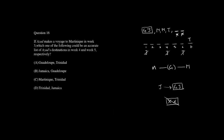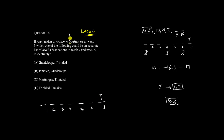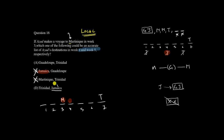Question 16 is another local question: if Azad makes a voyage to M in week three, which of the following could be an accurate list of Azad's destinations in weeks four and five respectively? We set up a working board with T in position seven and M in position three. Week four cannot be J — that's from our original rules. Week four also cannot be M since position three is already M, and consecutive destinations are not allowed. If there is a J in week five, the position before it must be G. Eliminating violations, the answer is A.